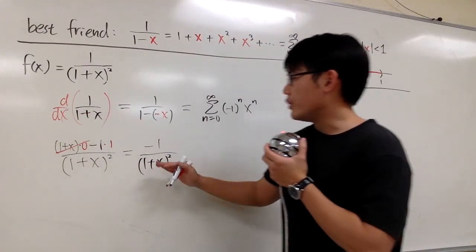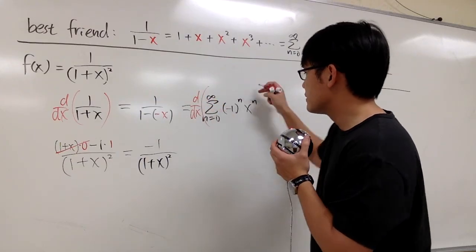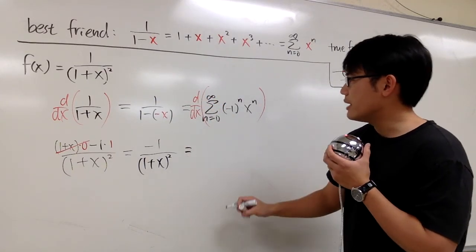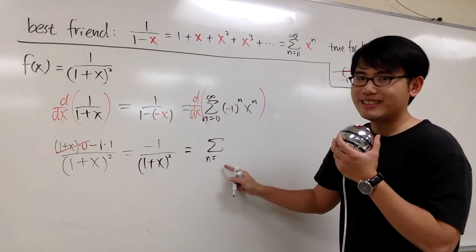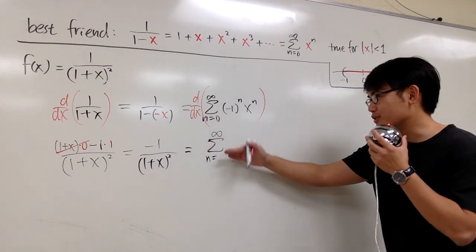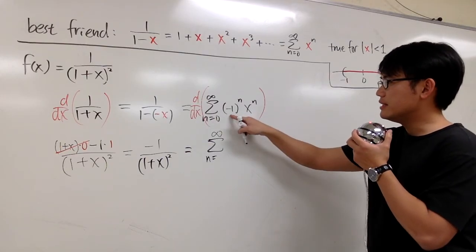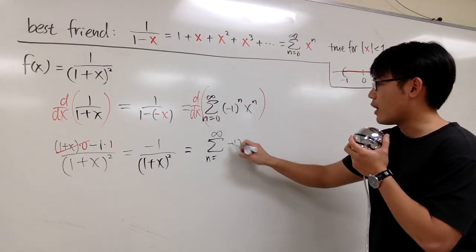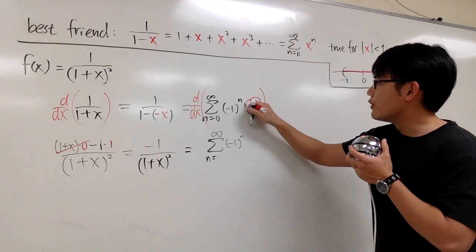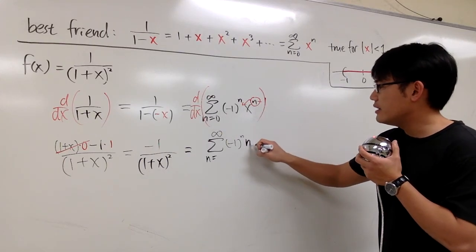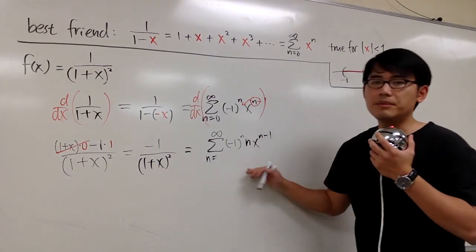So differentiating the left side gives that result, and we also differentiate the right-hand side. This becomes sigma — n starts at some value up to infinity. To differentiate, negative 1 to the nth power is just like a constant, and we differentiate x to the nth power by bringing the power to the front: n times x to the n minus 1.